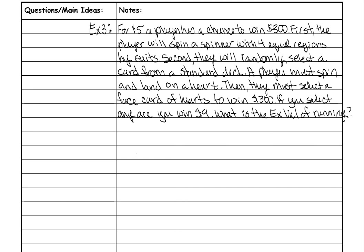First we need to figure out each of the situations and the money you'll earn. The first situation is they must spin and land on a heart, then to win $300 they also have to select a face card of hearts — so heart then face of hearts. Face cards are jack, queen, and king because they literally have faces on those cards. The second situation is you still have to spin a heart first, but then you can select any ace to win $9 — heart then any ace.